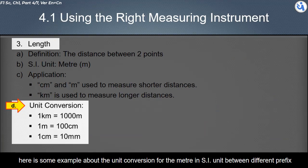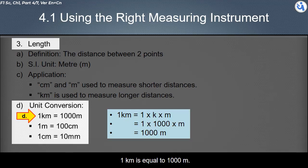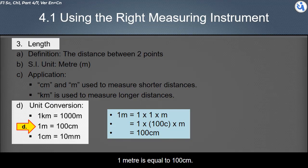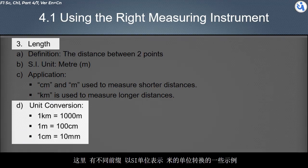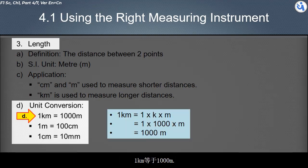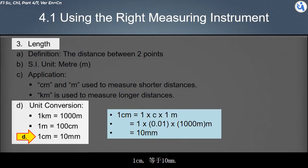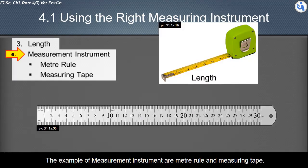Here is some example about the unit conversion for the meter unit between different prefix. One kilometer is equal to 1000 M, at which K, kilo, is represent 1000. One meter is equal to 100 centimeters. The example of measurement instrument are meter rule and measuring tape.